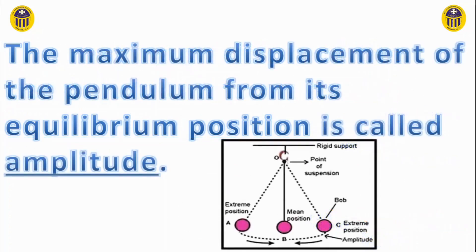The maximum displacement of the pendulum from its equilibrium position is called amplitude — in other words, how far out the bob goes.